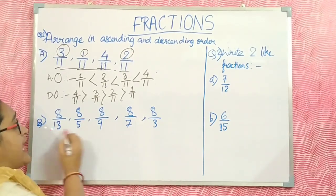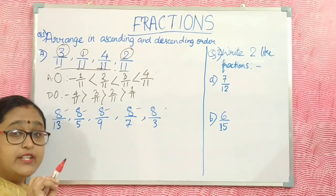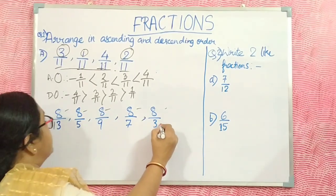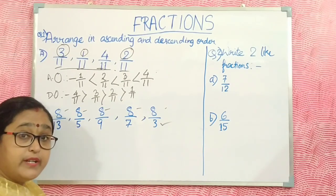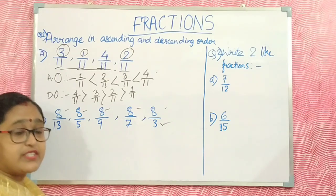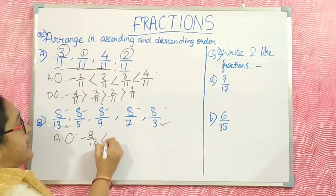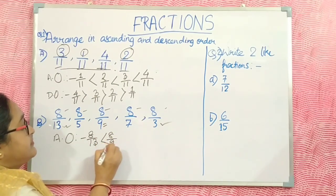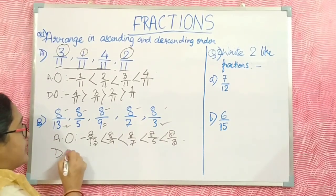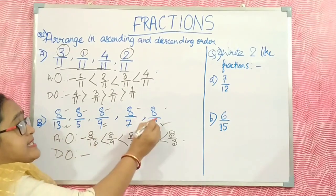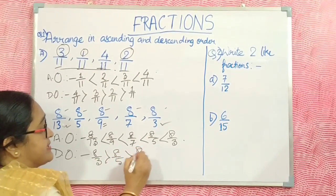Now for Unlike Fractions — different denominator — when the numerator is the same (for example all are 8), the denominator is least means that is the greatest fraction. So for ascending order with same numerator: the highest denominator comes first as the least fraction. The order is 8/13, 8/9, 8/7, 8/5, 8/3. For descending order, the denominator is least meaning the fraction is greatest — reverse the ascending order.